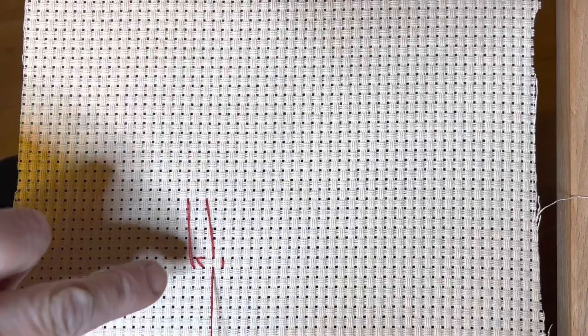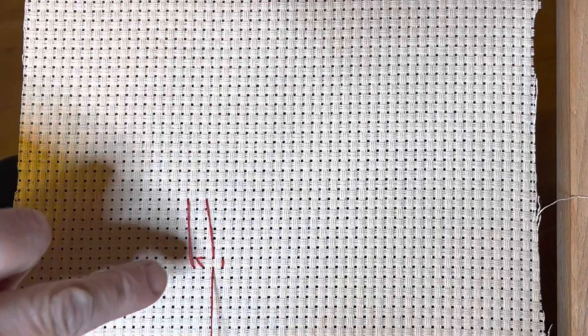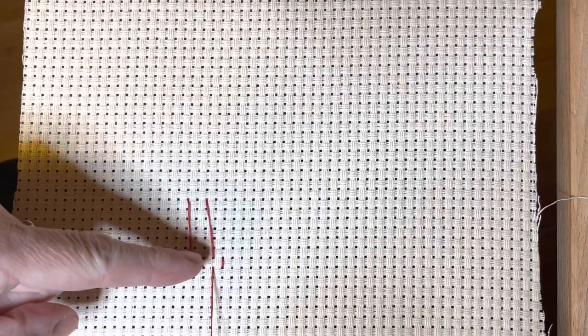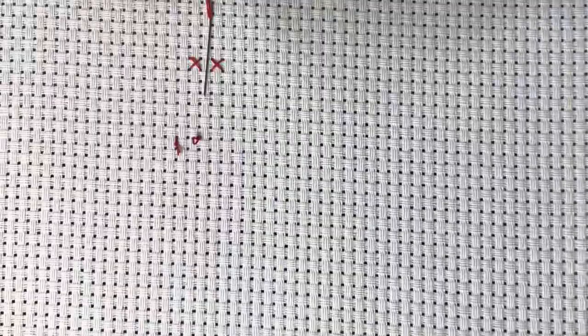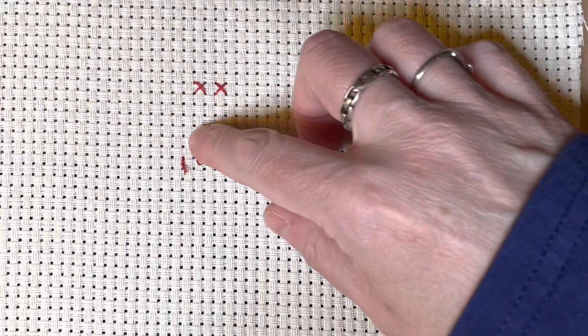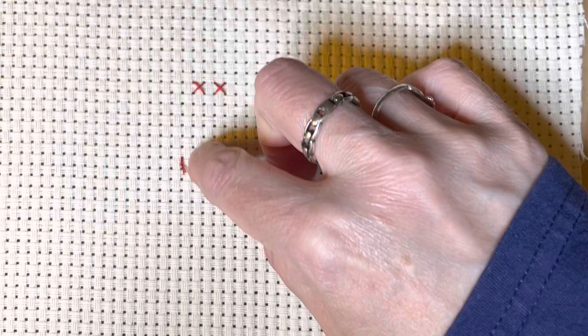So what does this look like on the back? So what you have are carried threads on the back. And as you're stitching along, as you're heading towards your waste knot, these carried threads are going to get covered up by threads so that it's going to secure that carried thread. So essentially, when you get to the waste knot, you'll stitch, stitch, stitch, stitch. And when you get to where the waste knot is, you just cut this off. And that carried thread that's running behind the fabric is going to be secured by all of those threads.